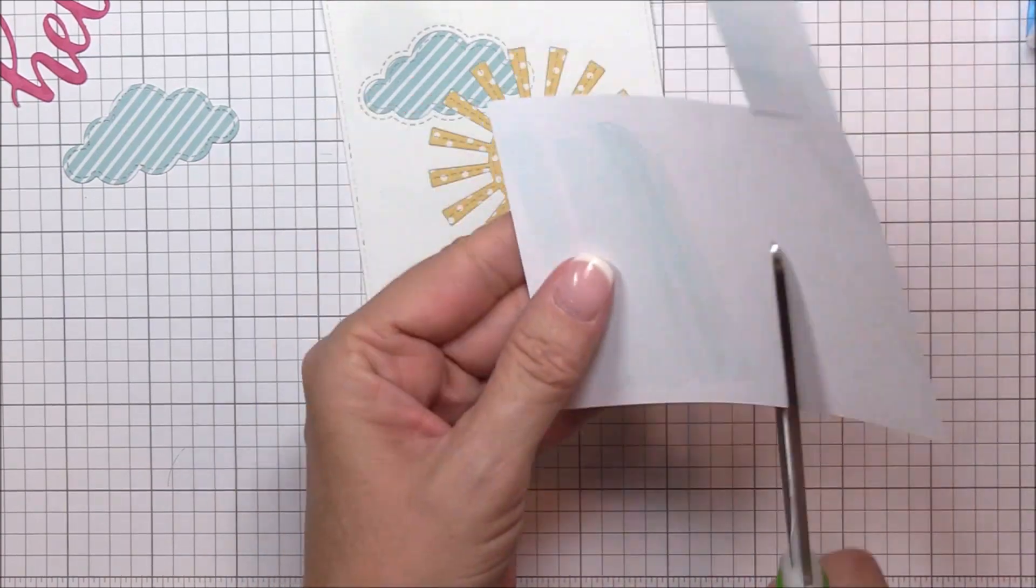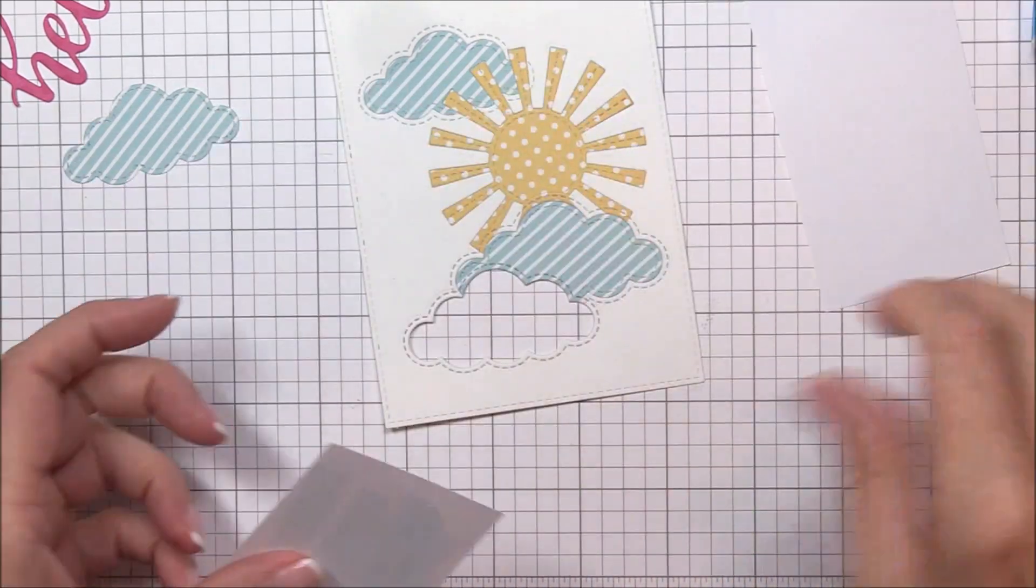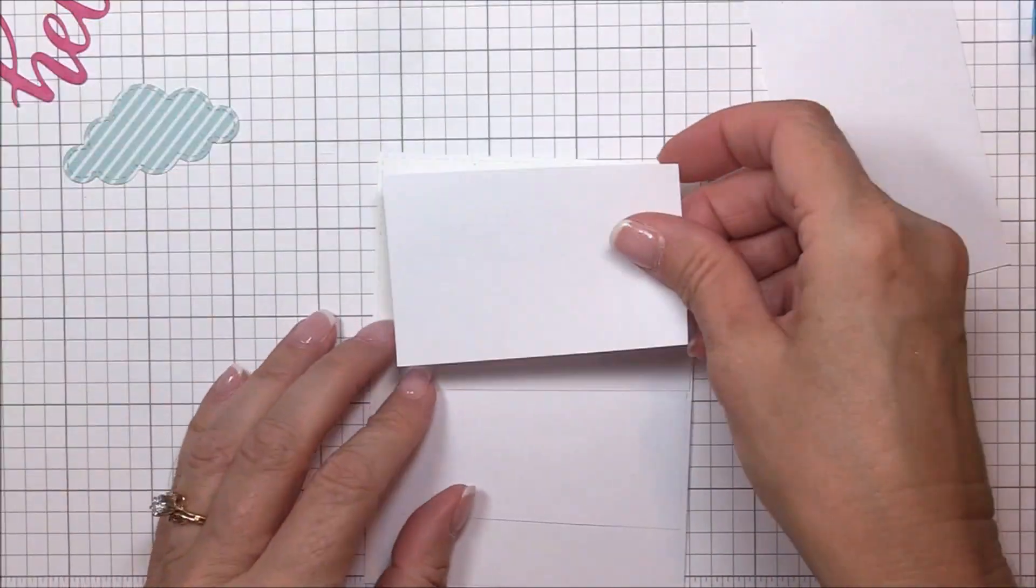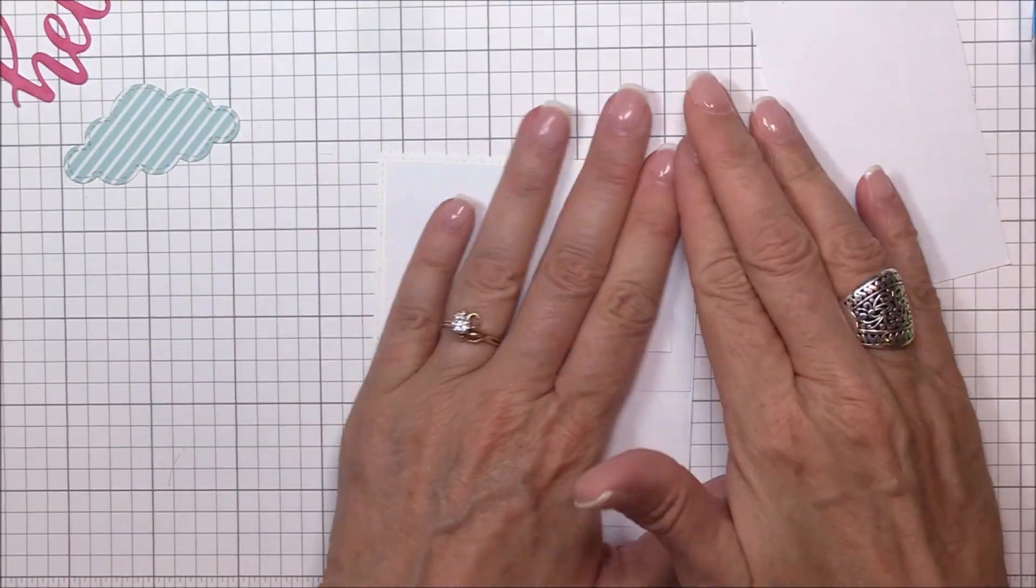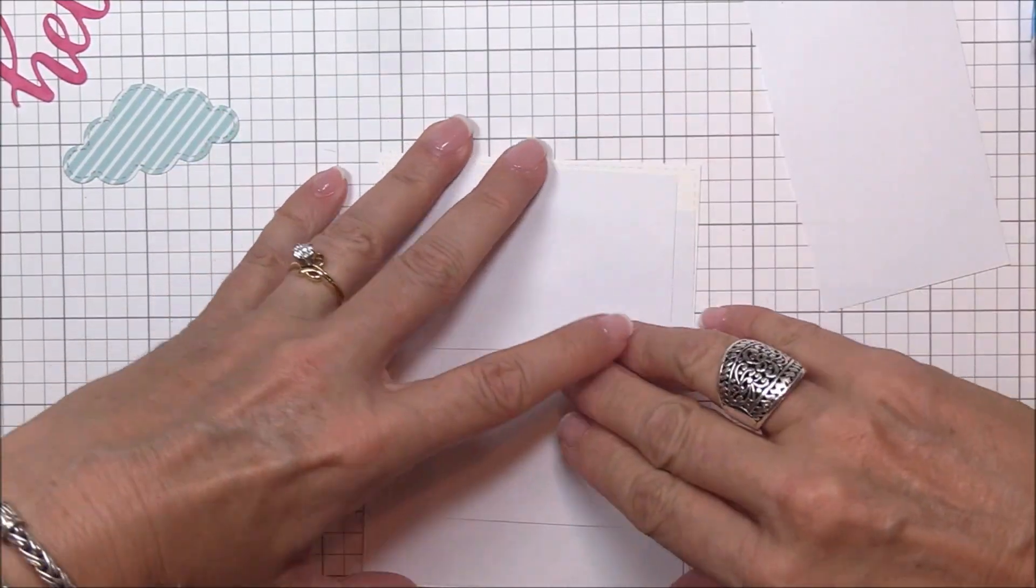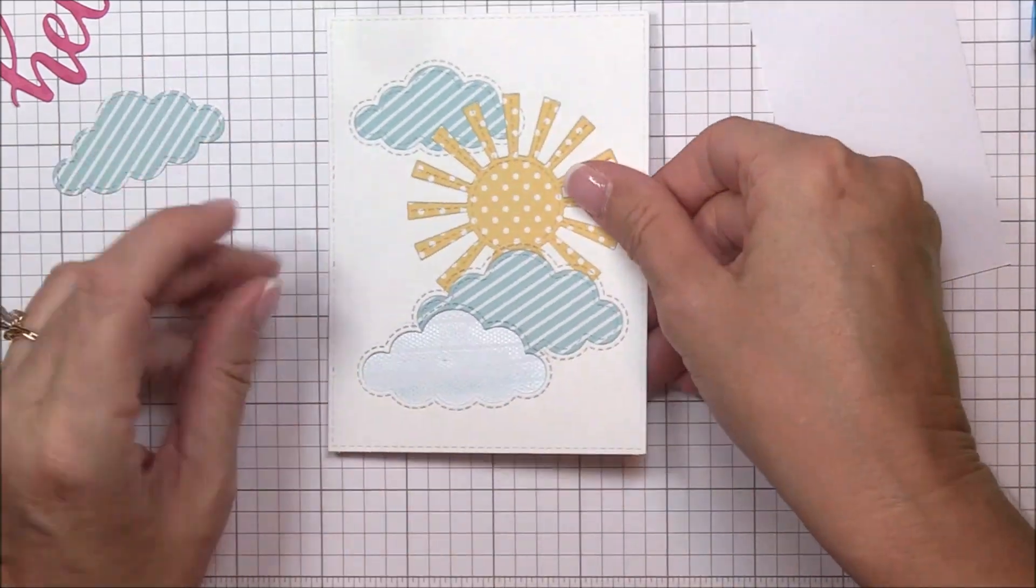I'm kind of lazy, so even though I tried to keep the bulk to a minimum, it was still hard to cut through all the layers for the third cloud. I just used my detail scissors to trim away the part of the die cut that was being a little stubborn. No big deal.